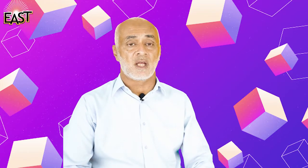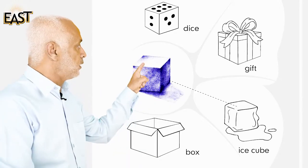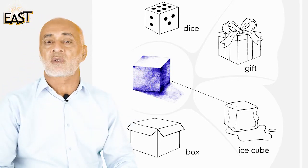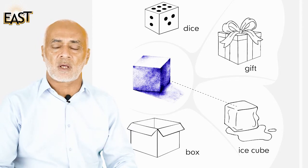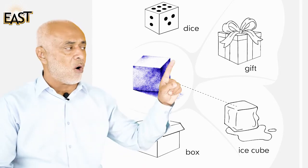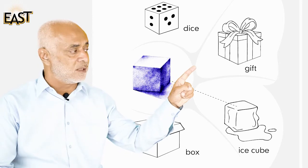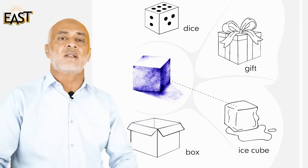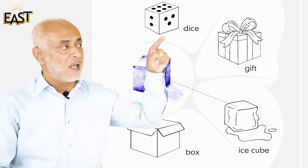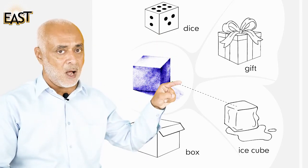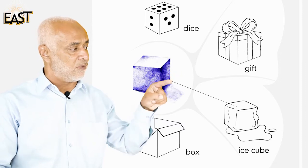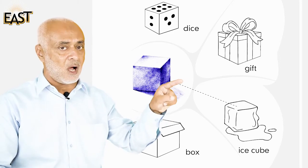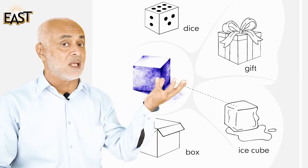The solid shape we are going to look at today is a cube. Do you know what is special about a cube? Its all sides are the same — is ki saari sides same hoti hain — up and down, left, right, every side is the same.